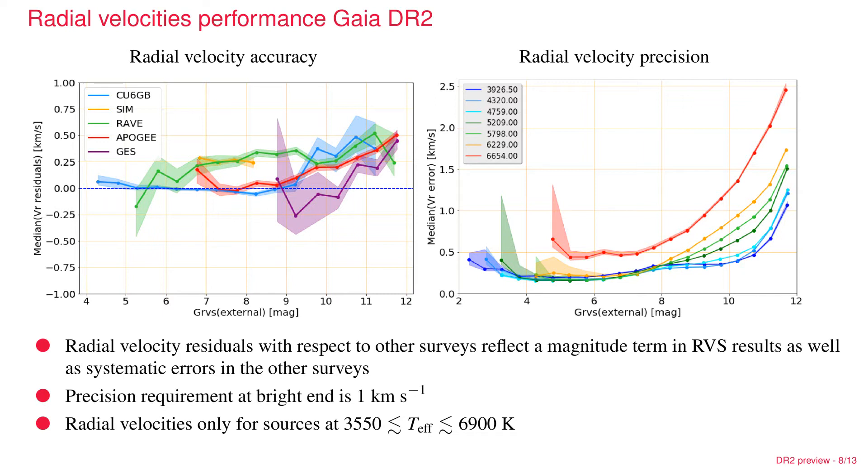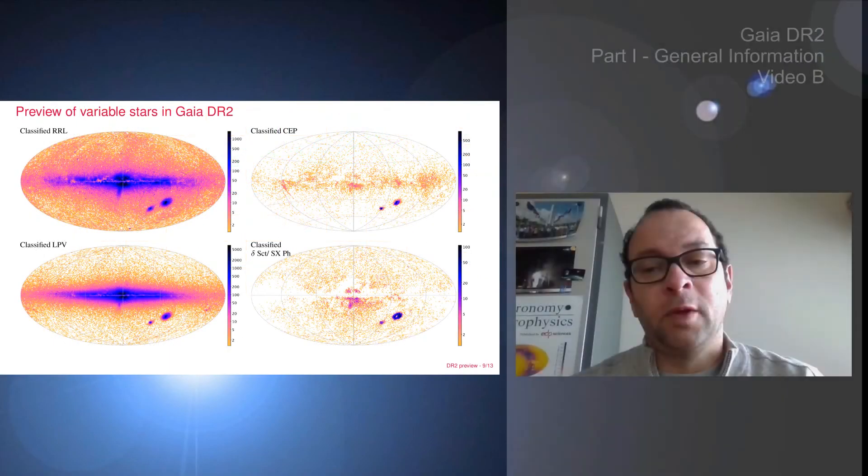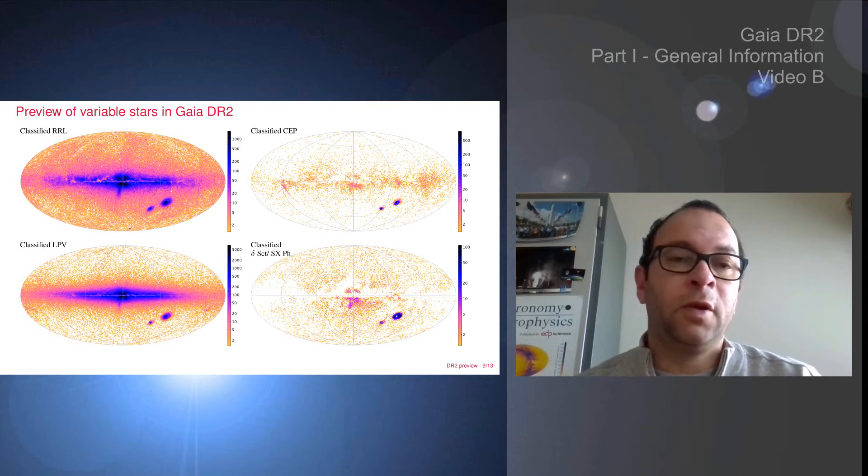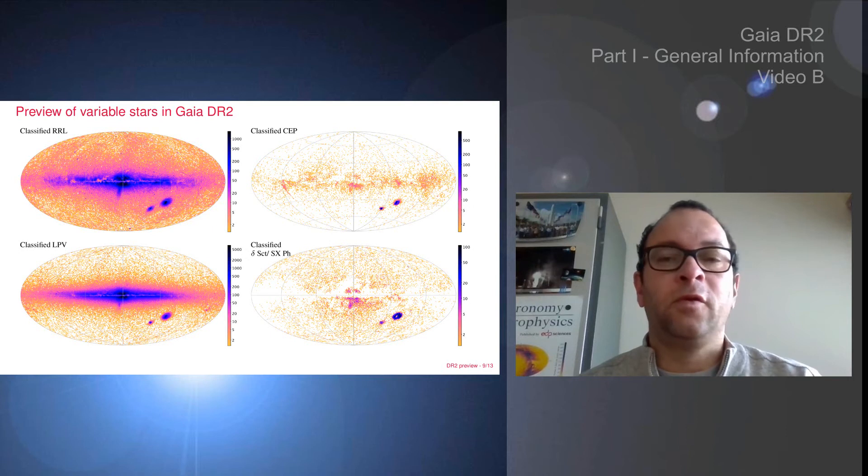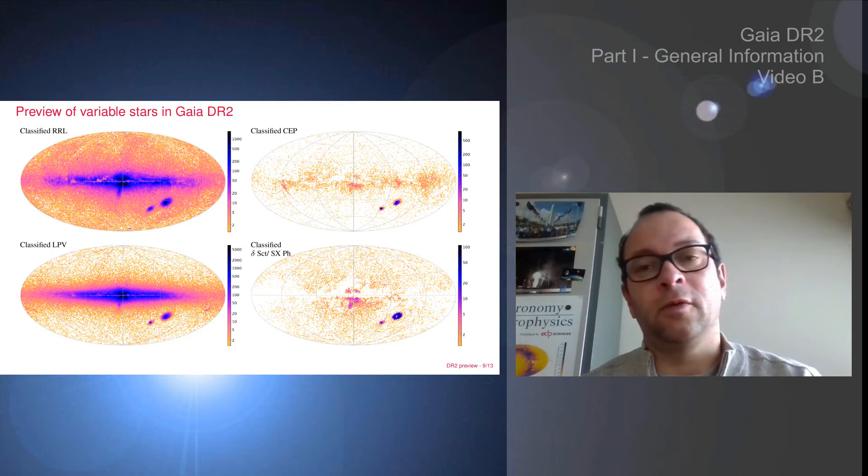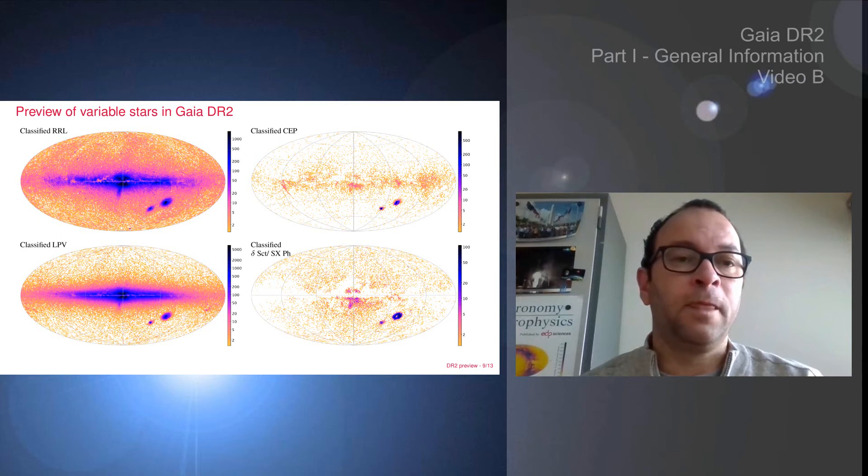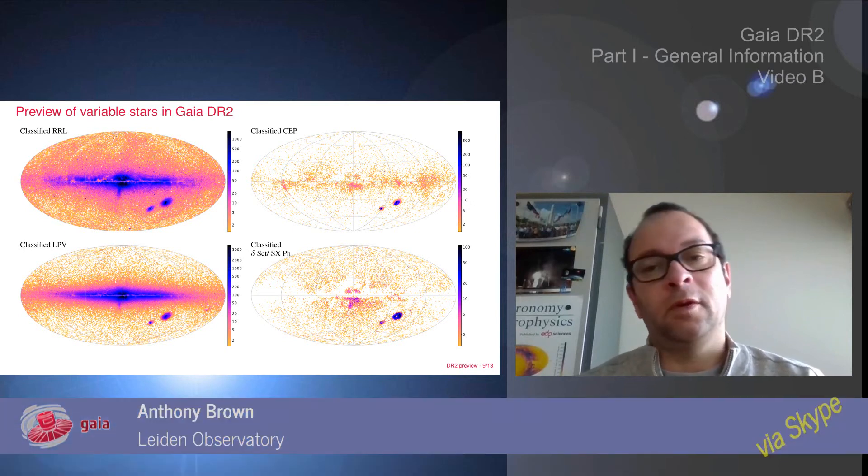We switch to the variable stars. These are four maps of examples of the types of variable stars that we have in the Gaia catalog. The variable star processing is done basically in two steps. In the first step, they make a classification of all stars in the sky that have been observed sufficiently often, trying to decide based on the points in the light curve whether it's an RR Lyrae or Cepheid or long period variable.